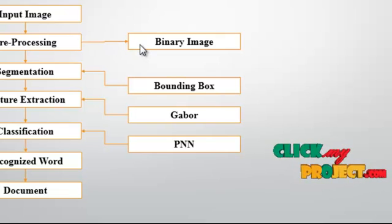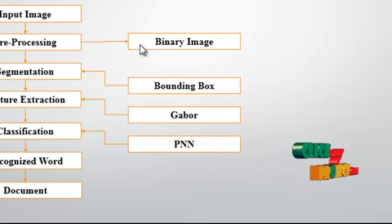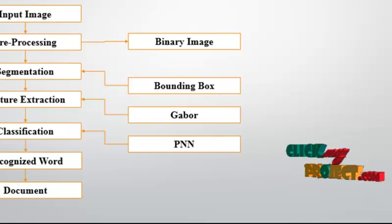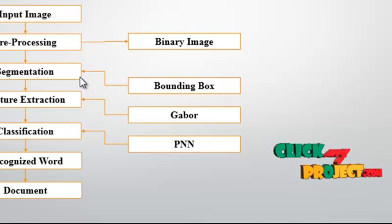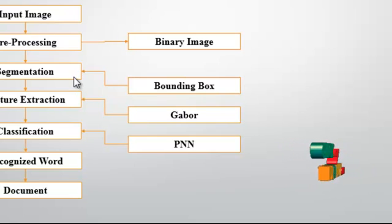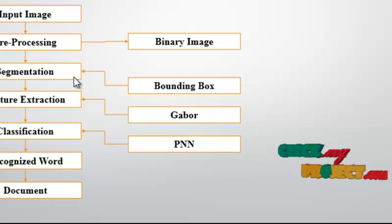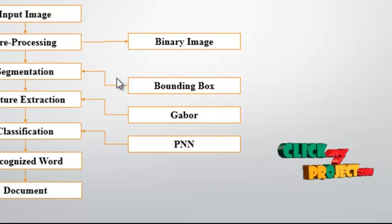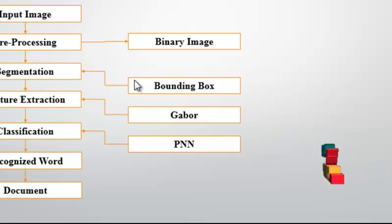The binary image contains only two values: ones and zeros. After the binary conversion, the image undergoes segmentation. In the segmentation step, bounding box segmentation is carried out.